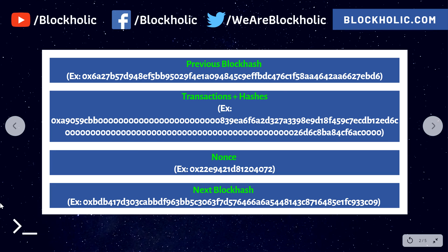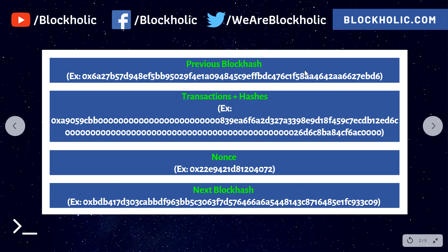There is an earlier block, this is the current block, and after that there will be another block — these blocks are connected together forming a chain, which is why we call it a blockchain. A block typically contains one previous block hash, which is the transaction hash of the earlier block, and the hash of the next block.